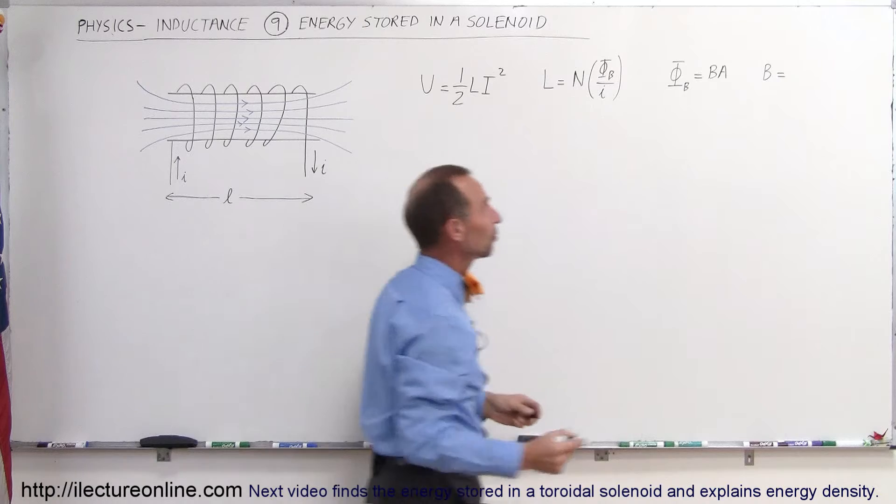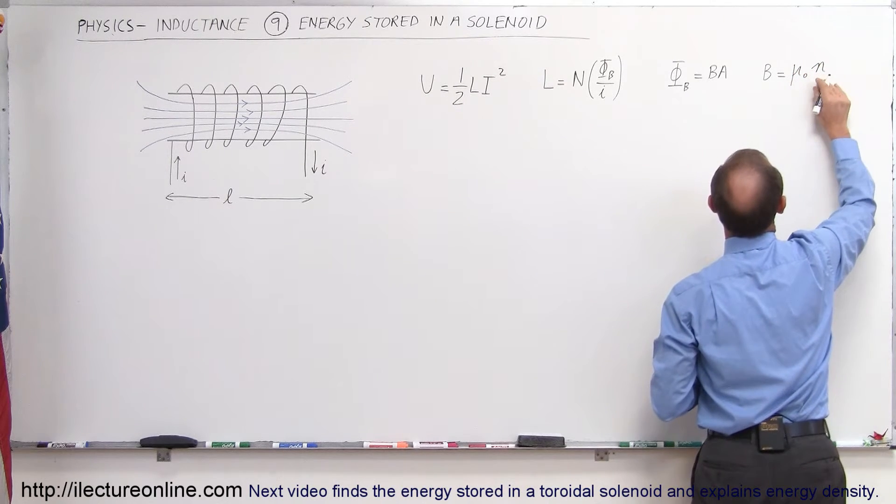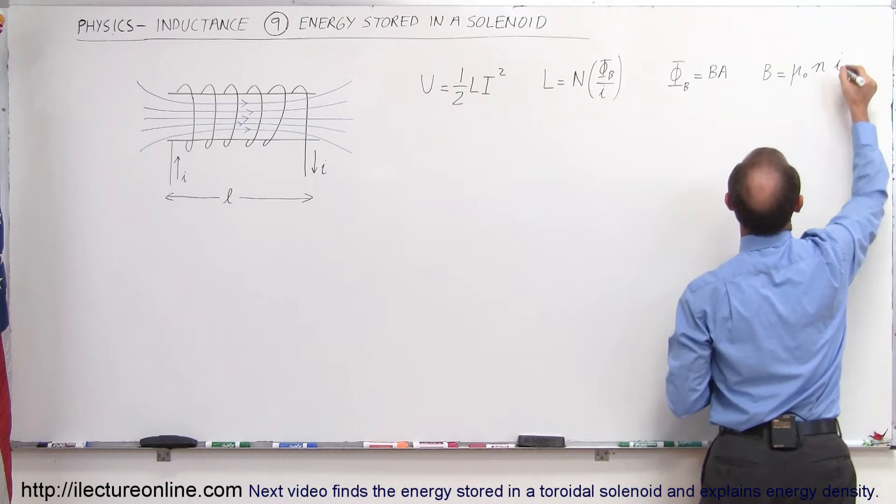So this can be written as mu sub-naught times the total number of loops divided by the length of the solenoid times I.